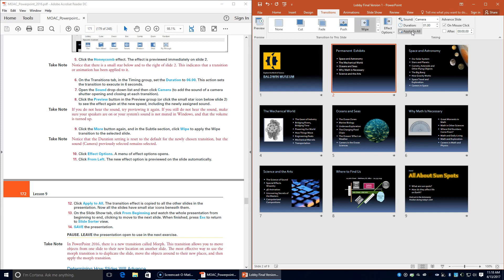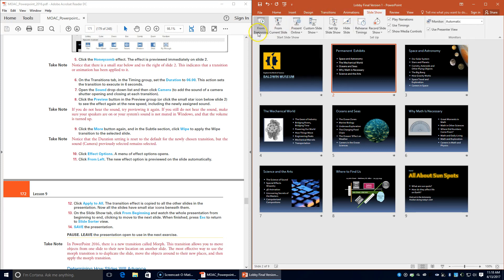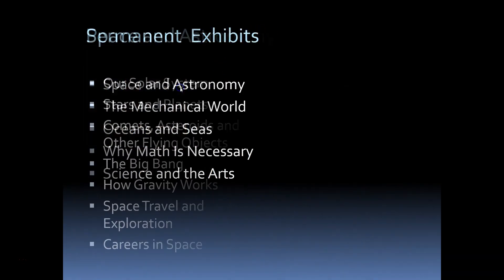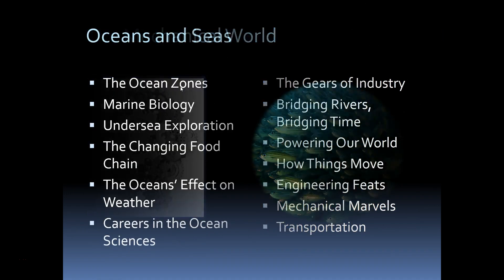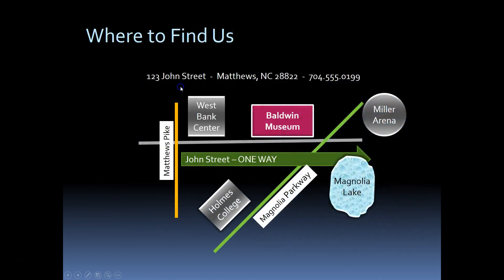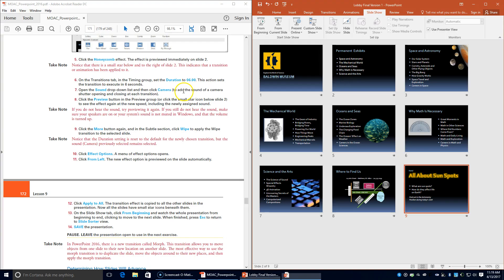We're going to choose Apply to All — the transition effect is copied to all slides in the presentation. Now all slides have a star icon beneath them. On the Slideshow tab we're going to click From Beginning to watch our presentation as we click through the slides. When finished, press Escape to return to Slide Sorter view and save the presentation.